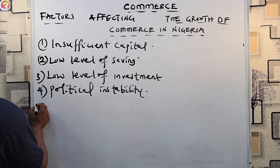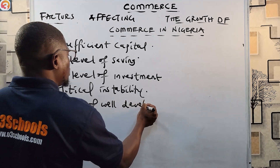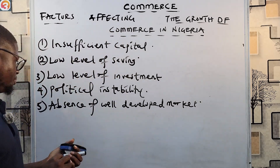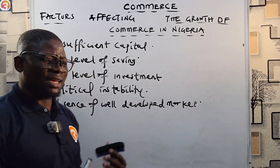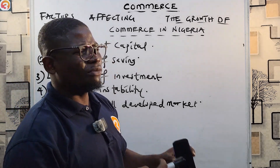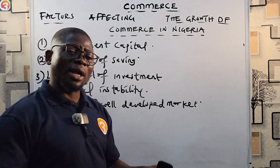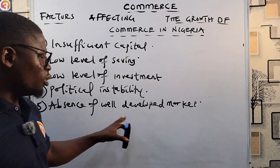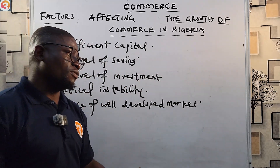Number five is absence of well-developed markets. There are no really well-developed markets where people can go and sell their goods effectively. Government needs to work on all our markets — we have local governments, there are many markets everywhere, but they are not well-developed or well-structured. Not having well-developed markets is what's affecting the growth of commerce in Nigeria.